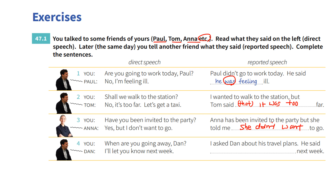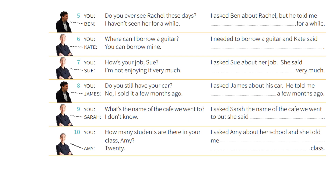Number four: You say, 'When are you going away, Dan?' Dan says, 'I will let you know next week.' I asked Dan about his travel plans. He said that he would let me know next week — so 'will' becomes 'would.' Number five: You say, 'Do you ever see Rachel these days?' Ben says, 'I haven't seen her for a while.' I asked Ben about Rachel, but he told me that he hadn't seen her for a while.